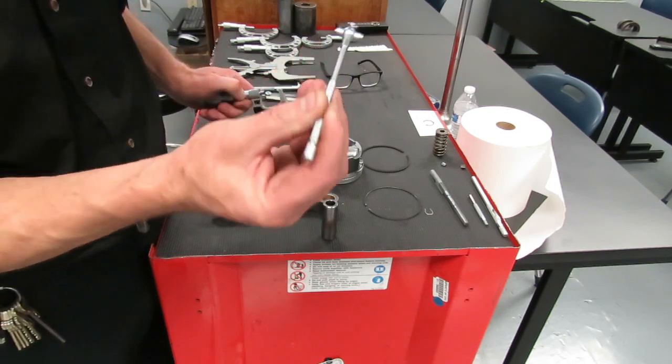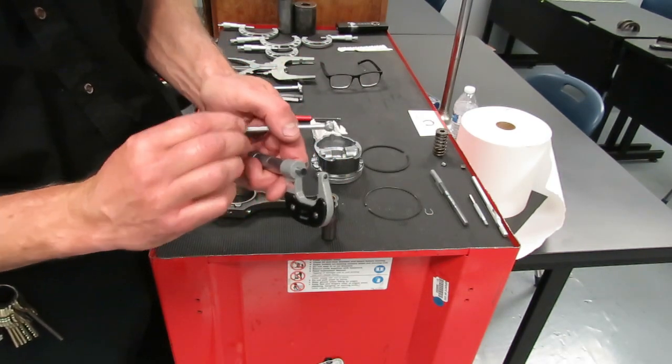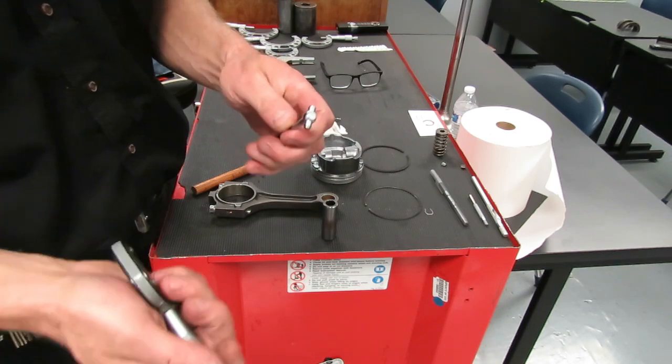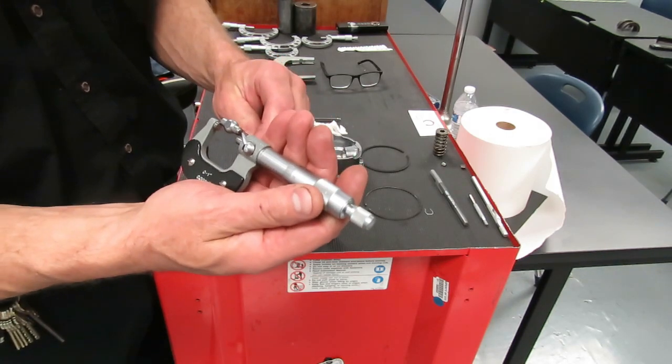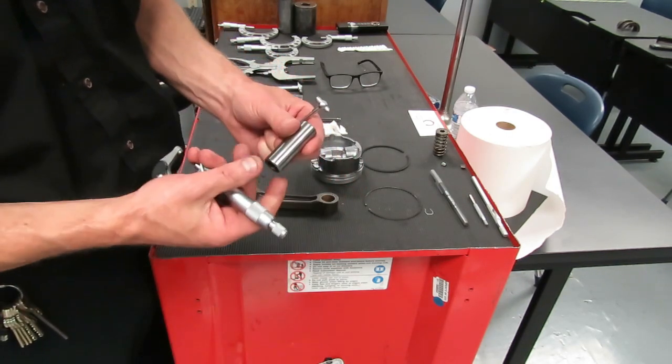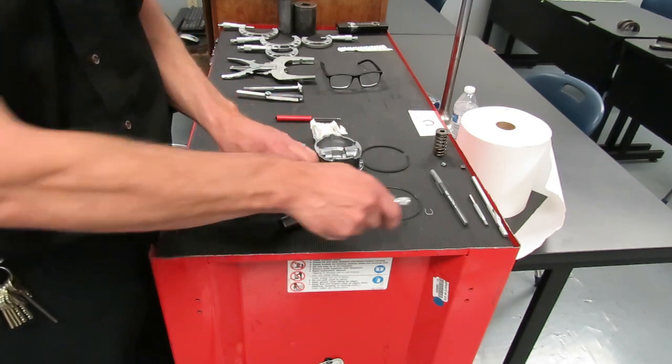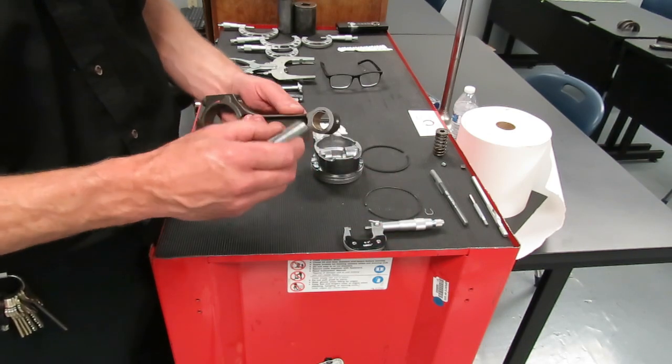And we're just going to transfer that reading, just like we did on the big end, to a mic. You're going to mic that reading. And that reading, you're going to compare to the size of your pin bore. And that is going to tell you what your clearance is.